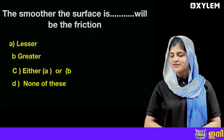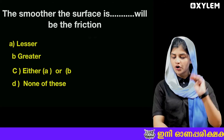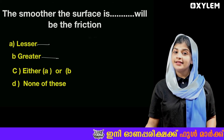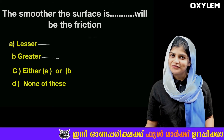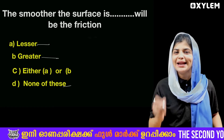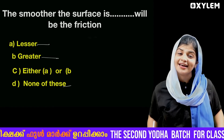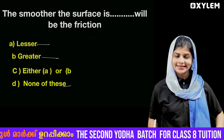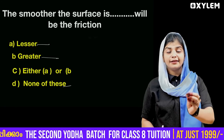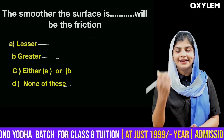Next question: The smoother the surface is, the more blank the friction will be. We have four options: A) Lesser, B) Greater, C) Either A or B, D) None of these. You have to answer in the comment box. If you are struggling with any topic, comment in the comment box.